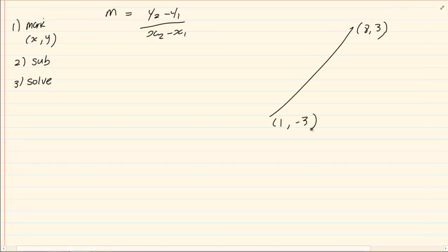Let us take this line. I want the gradient of the following line. Number one, we're going to mark our x1, y1 and our x2, y2. Now as I said it doesn't matter which one you choose as x1, y1 provided the ones are in one bracket and the twos are in one bracket. You must not mix those up.